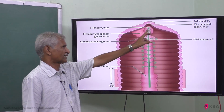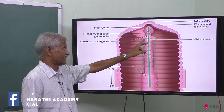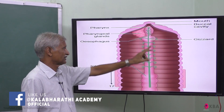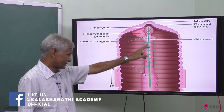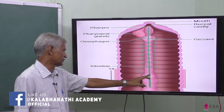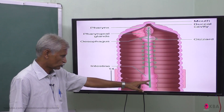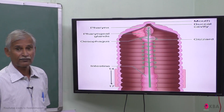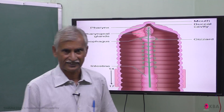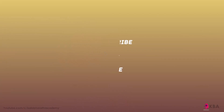To summarize: one is the mouth, then comes the buccal cavity, then the pharynx, then the gizzard — slightly bigger — then the intestine from the 7th segment onwards. This is the structure of the digestive system. Thank you, students.